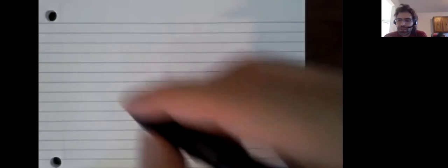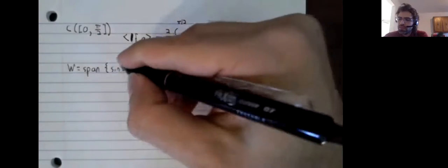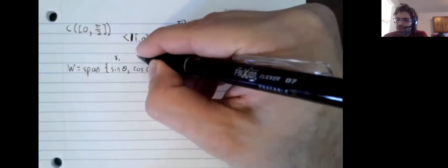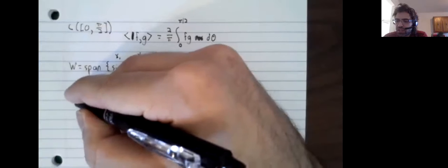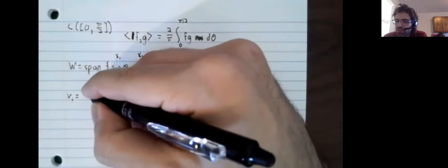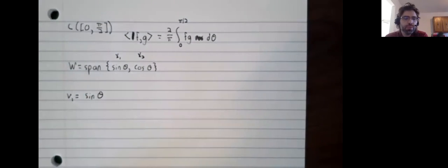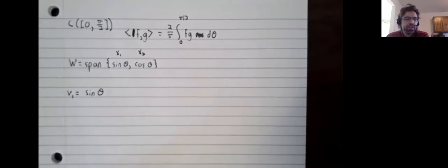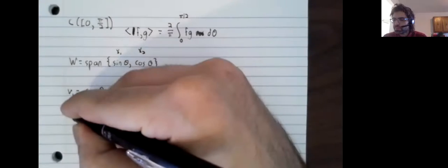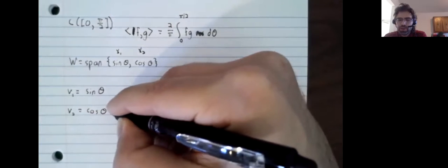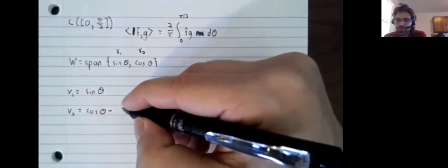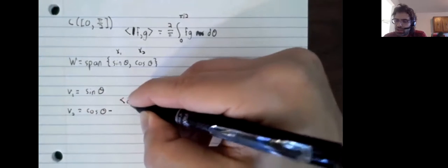Let's do the same thing here, just to illustrate that we can. Aside from the fact that this inner product is significantly more unwieldy than the standard dot product, the Gram-Schmidt process passes through. So V1 equals X1, V2 equals X2 minus the orthogonal projection of cosine onto sine.